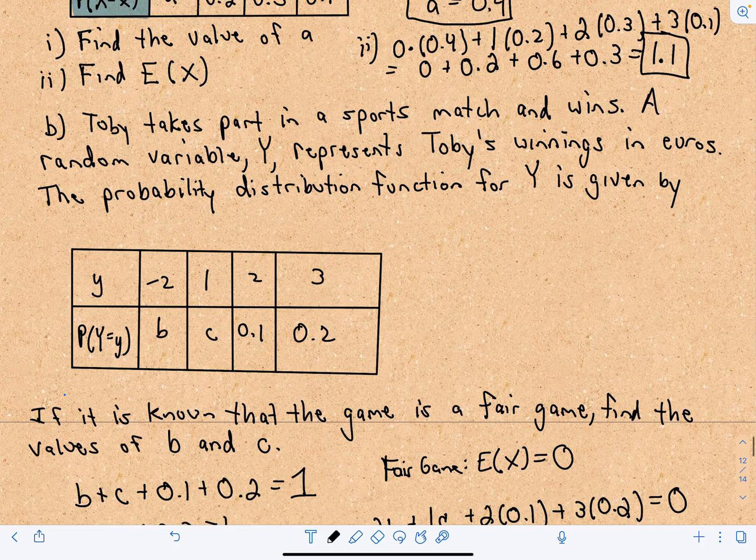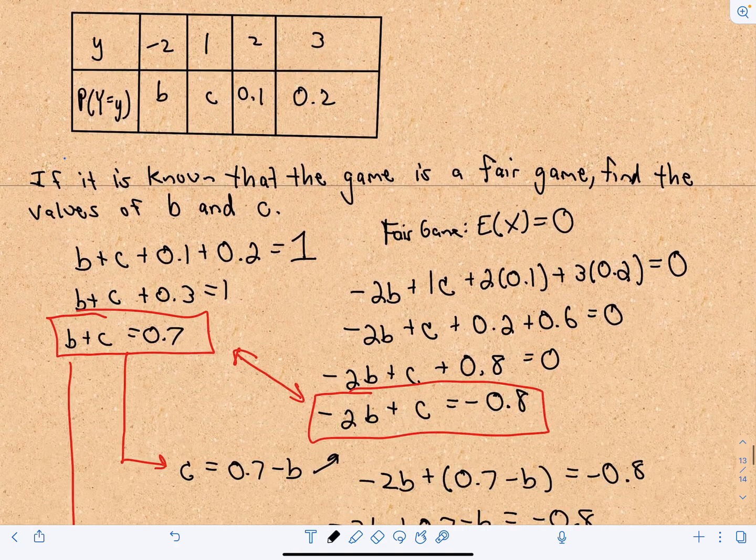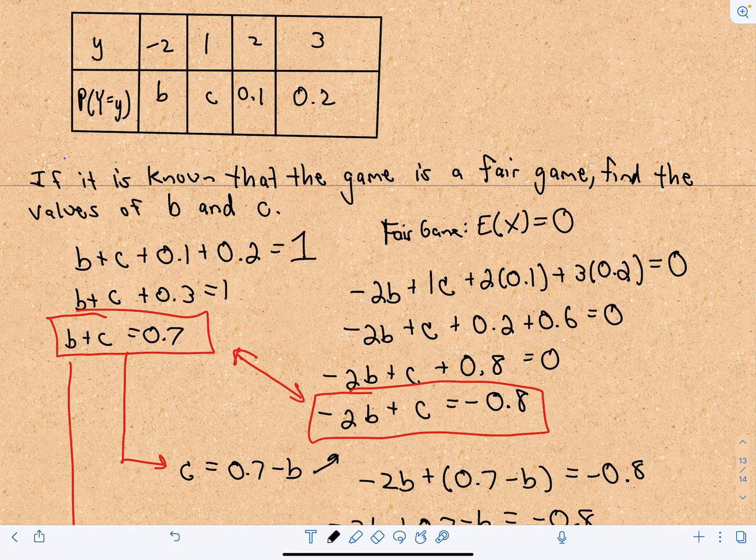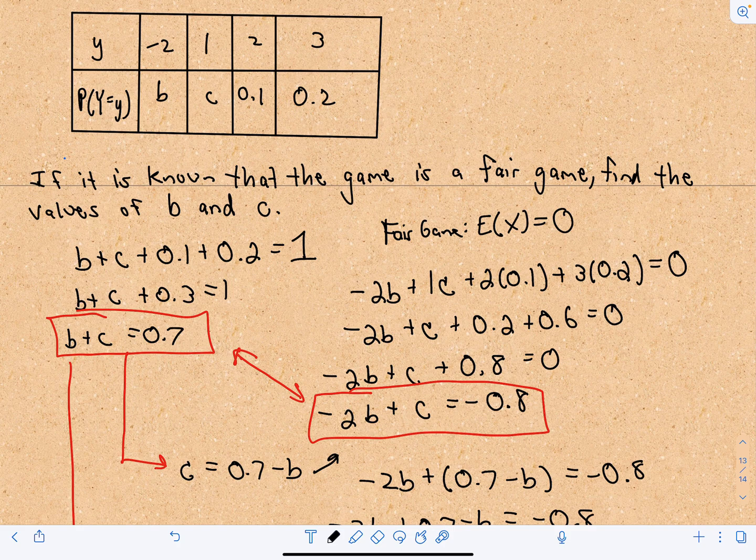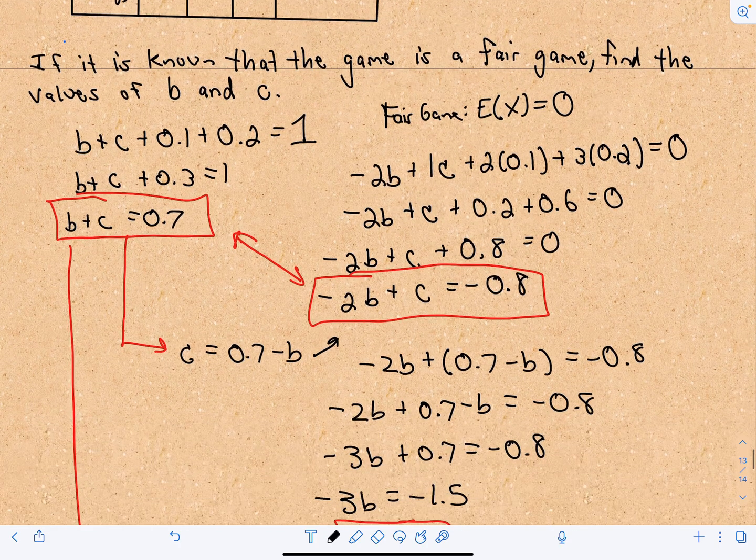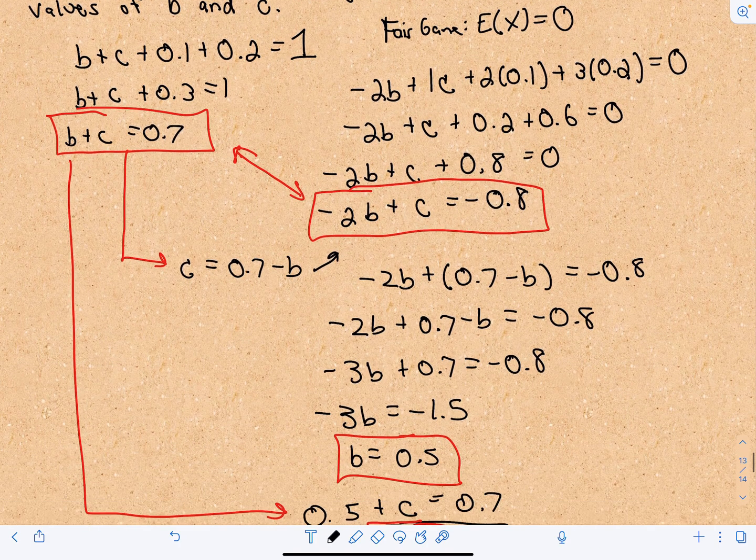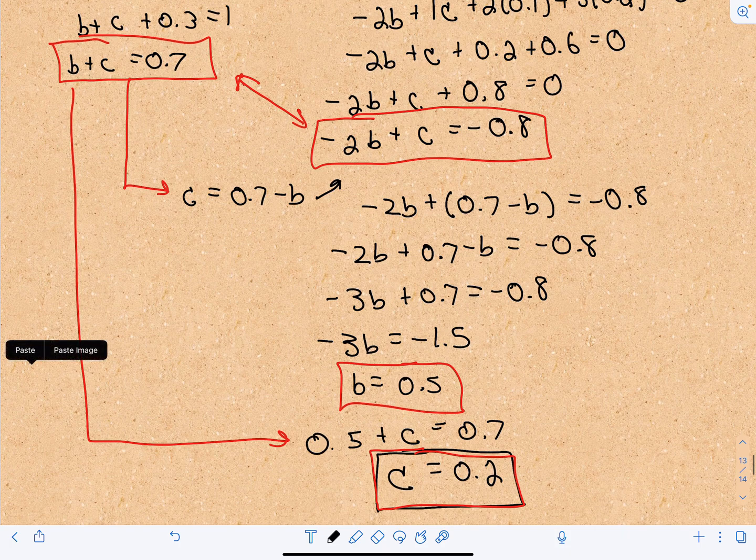And then the second, part B, was a little more tricky. You had to create the system of equations. But that's the whole trick. And you need to know that a fair game is going to mean the expected value equals 0. So certainly a few things to know. But if you know those things, it's a relatively, hopefully, straightforward system of equations that you can solve.